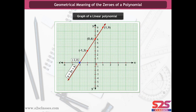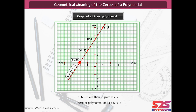From the graph, we can see that y = 3x + 6 intersects the x-axis at (-2, 0). If 3x + 6 = 0, then x = -2. That means the zero of the polynomial 3x + 6 is -2. So the x-coordinate of the point where the line intersects the x-axis is also -2. Hence, the zero of the polynomial is the x-coordinate of the point where the graph of y = 3x + 6 intersects the x-axis.